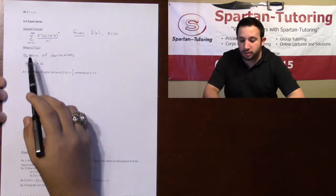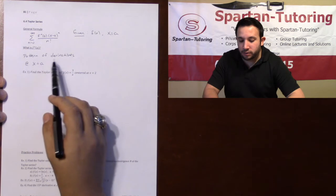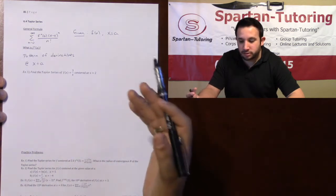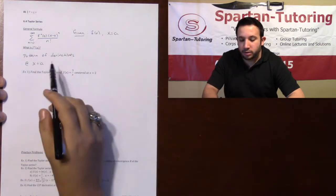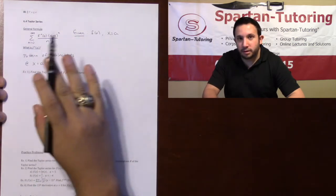Now, what is f to the n of a? f to the n of a is going to be the pattern of derivatives at that x equals a, whatever it may be. So if you can find the pattern, you just plug that into here, and you're done.